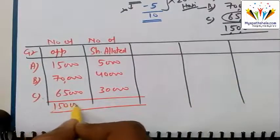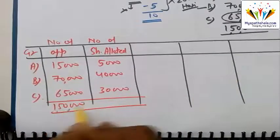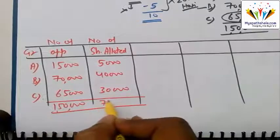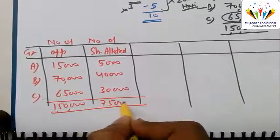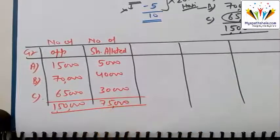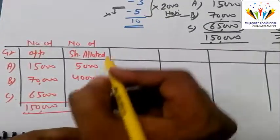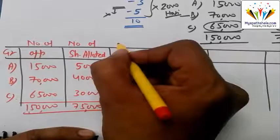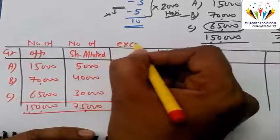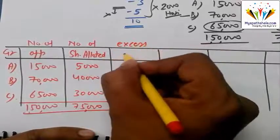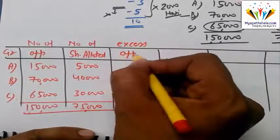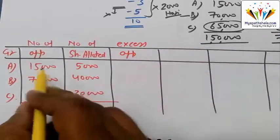In total, we have 1,50,000 applications for 75,000 shares. Now we look at the excess applications.